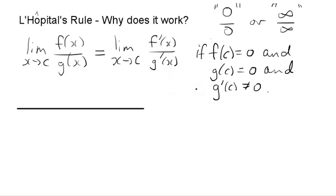Actually, in some of the other videos, you may have noticed that there's a more general form of L'Hopital's rule that allows g'(c) to be equal to 0 with some other conditions. But let's not worry about that. We'll just look at the simplest form of L'Hopital's rule where we have this. And we'll only look for now at the 0 over 0 form.